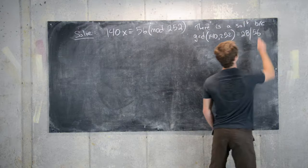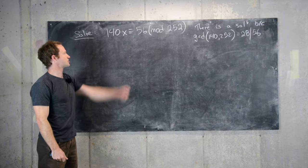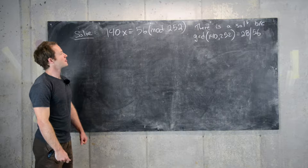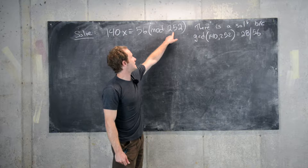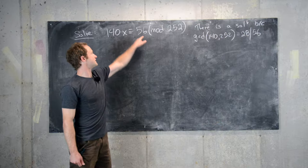So I have a previous video where I established this relationship that such a linear congruence has a solution if and only if the GCD of the coefficient of x and what you're taking all your modular arithmetic with respect to, if the GCD of that divides this number. And so that's maybe the first fact.